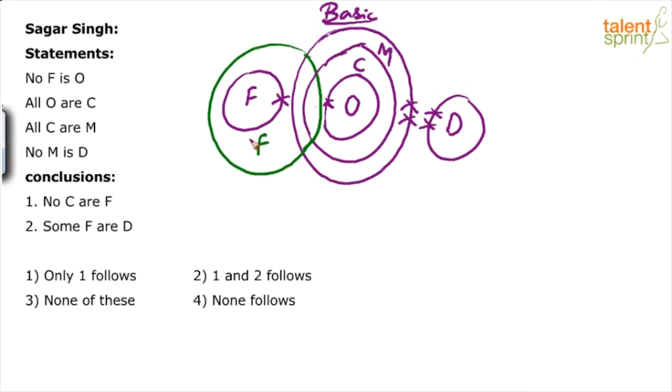So this green diagram that you see is a possibility case. What we have drawn in purple is the basic diagram. Now the moment you draw F in this fashion, you find that F and C overlap. There's an overlapping between F and C. And even without drawing this possible diagram in green, you would know that F will not touch O, but F can come and touch C, F can come and touch M.